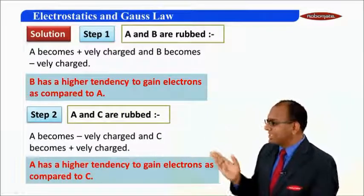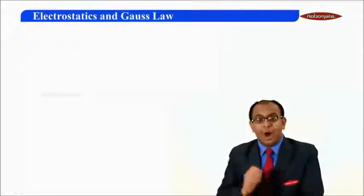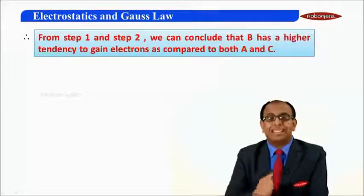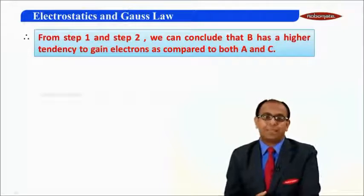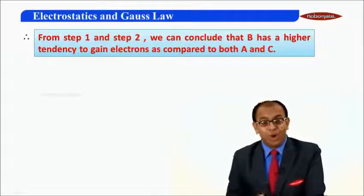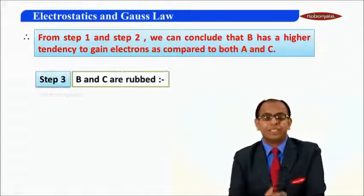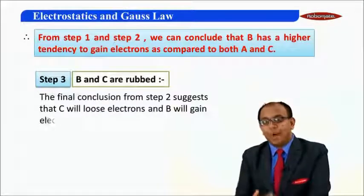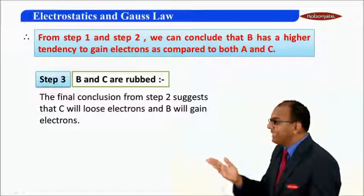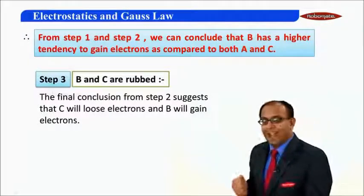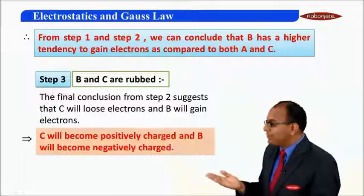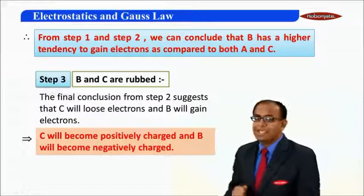From step 1 and step 2, we can see that out of A, B, and C, B has the highest tendency to gain electrons as compared to A and C. So when B and C are rubbed with each other, it is very obvious that C will lose electrons and B will gain electrons. As a result, C acquires positive charge and B acquires negative charge.